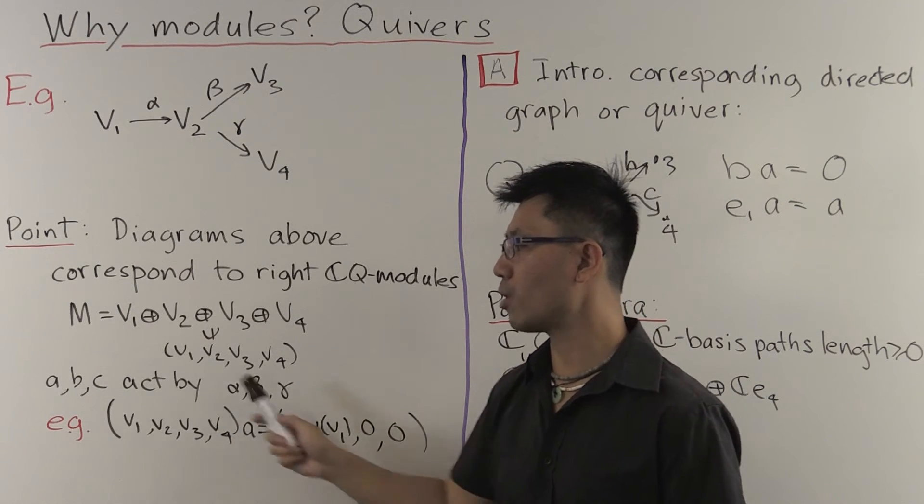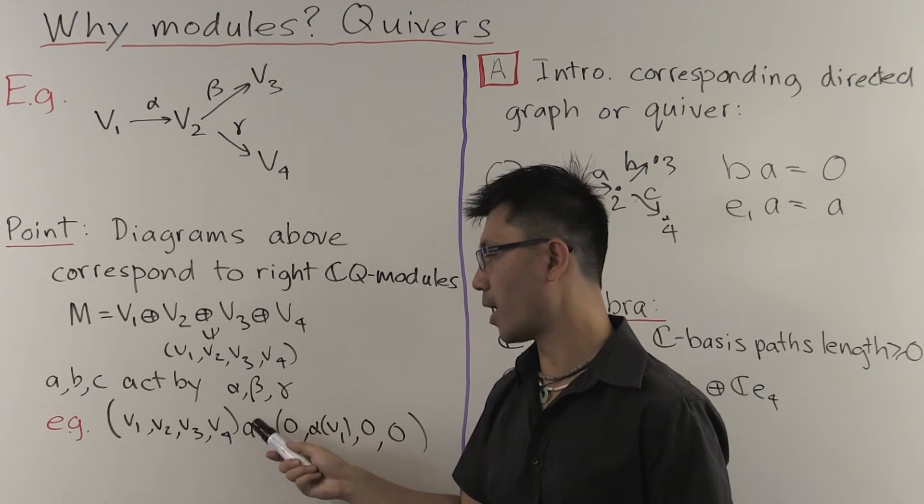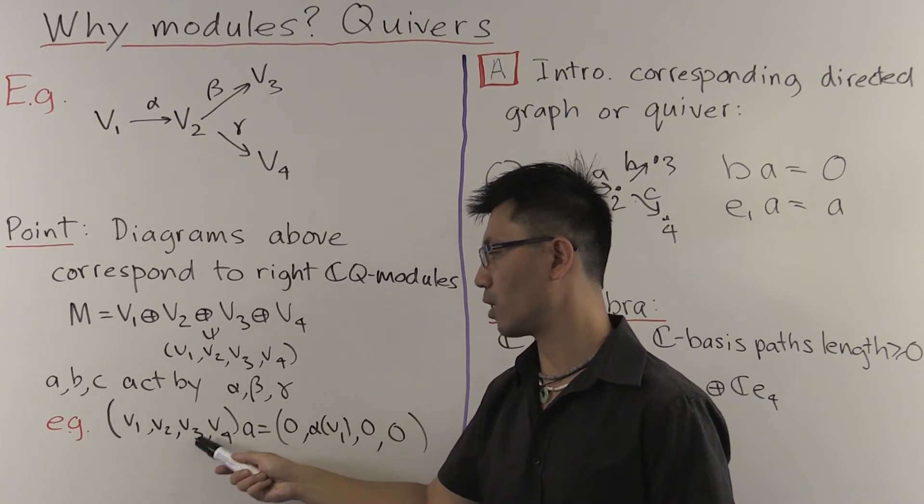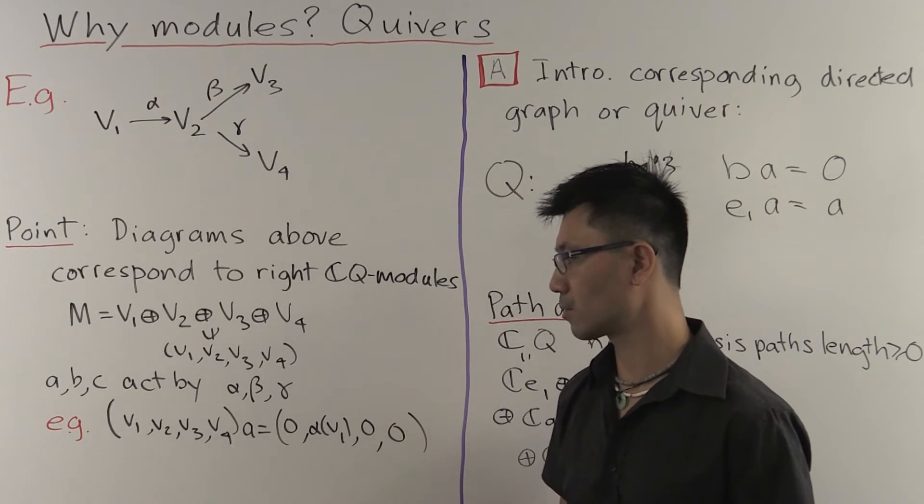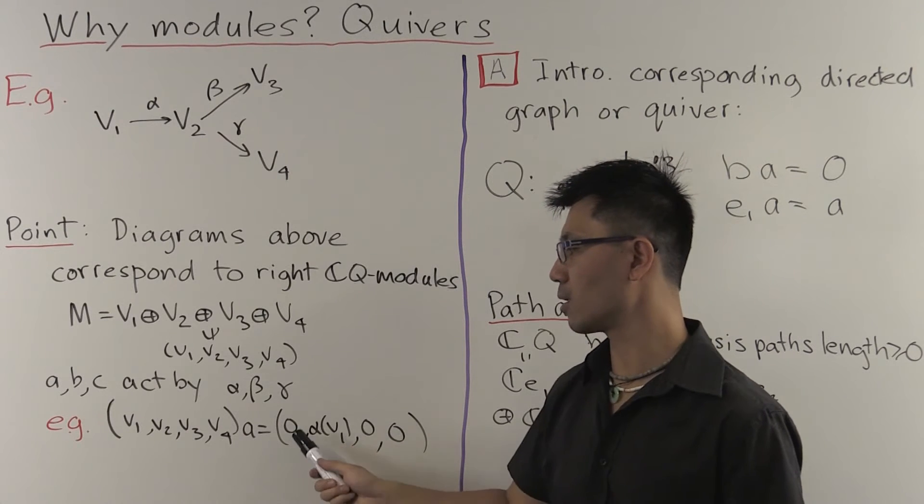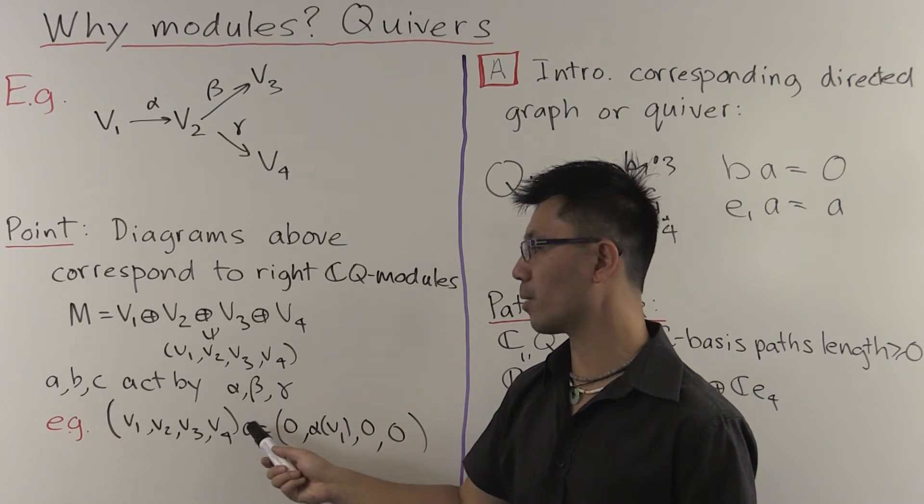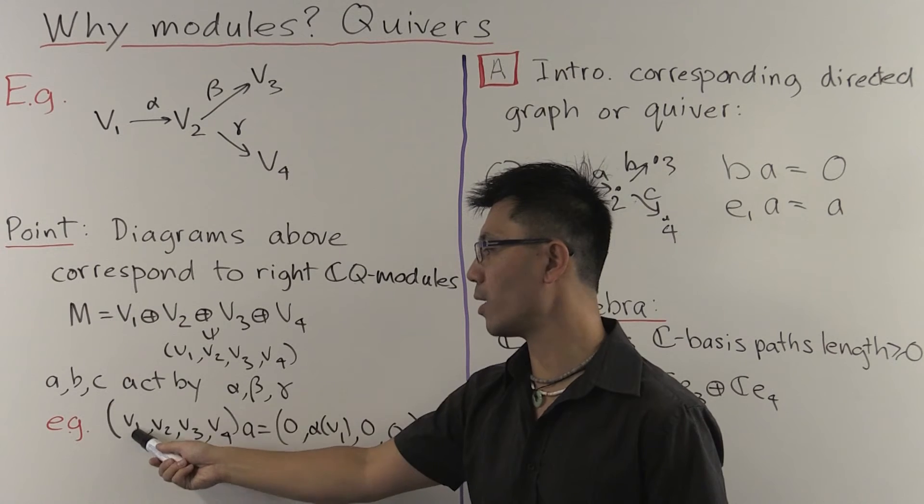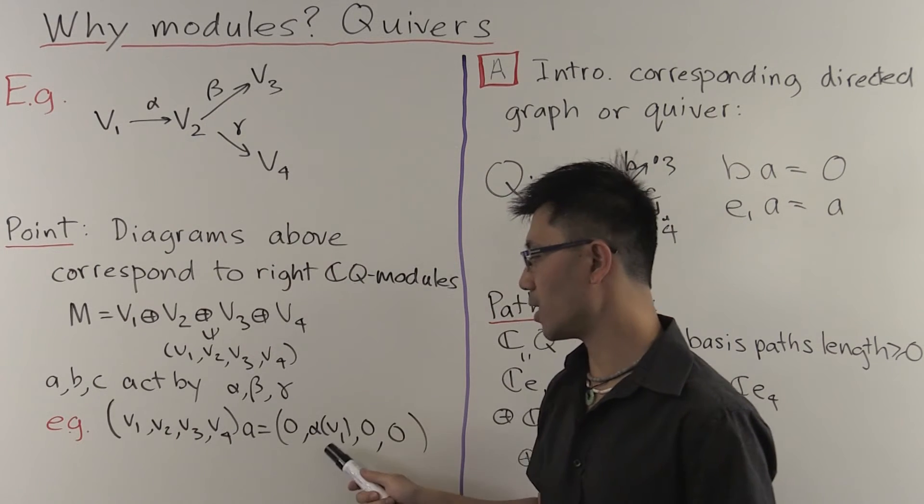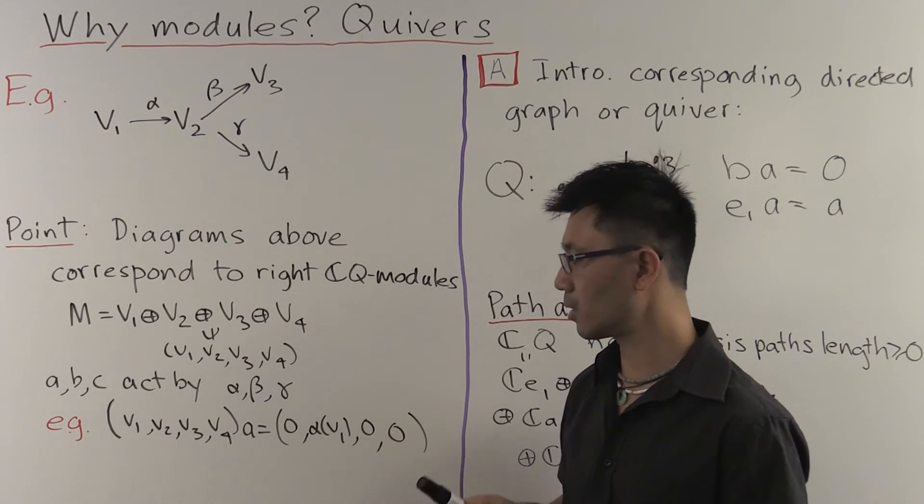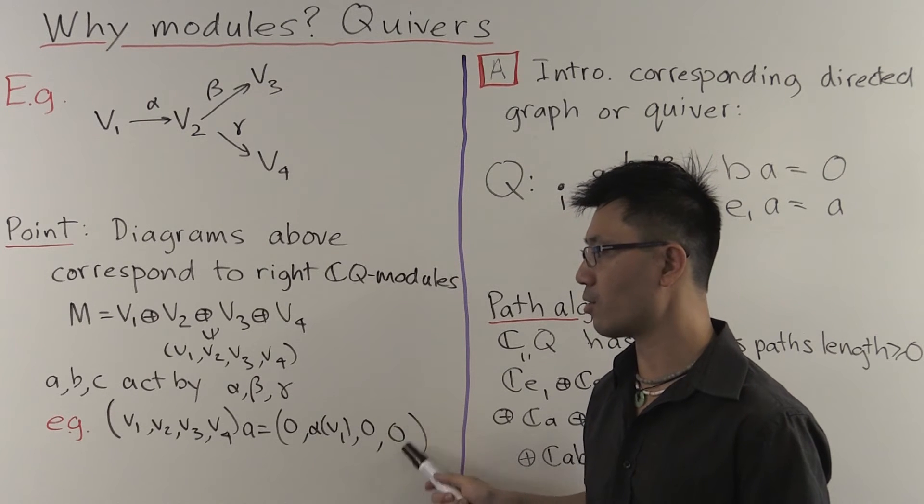So it sends V1 to V2 via alpha and the other summands it sends to 0. In other words, if you right multiply V1, V2, V3, V4 by A, you'll get this vector here. 0, you can apply alpha to V1, and that lives in V2 here to get alpha of V1. And then you get 0 and 0 here.